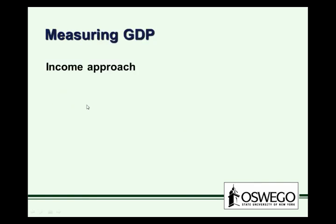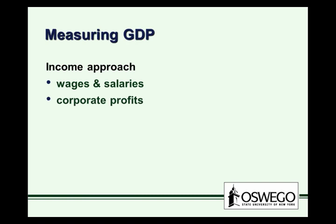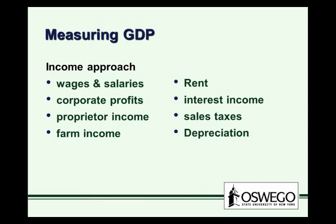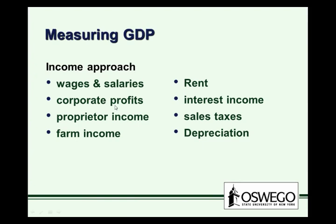All those components give us GDP under the expenditure approach. Alternatively, we can also calculate GDP with an income approach. The largest category here would be wages and salaries. We'd also bring in corporate profits, proprietor income (sole owner type income), farm income, rent that comes to landlords, interest income, sales taxes, and the depreciation of plants and equipment. We add these all up and we should get GDP using the income approach. Theoretically, both approaches should give us the exact same amount, though when GDP is measured quarterly by the federal government, the two approaches often give slightly different numbers due to measurement error in such a large economy.